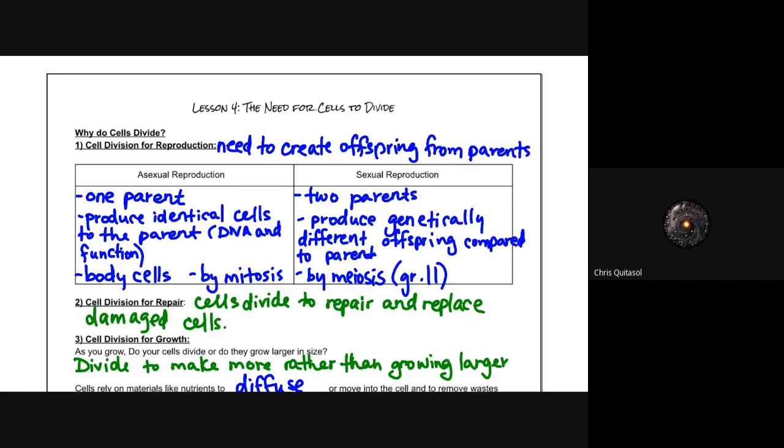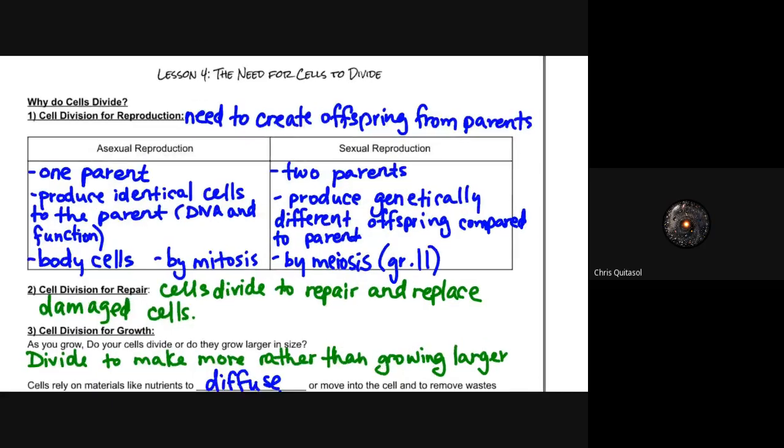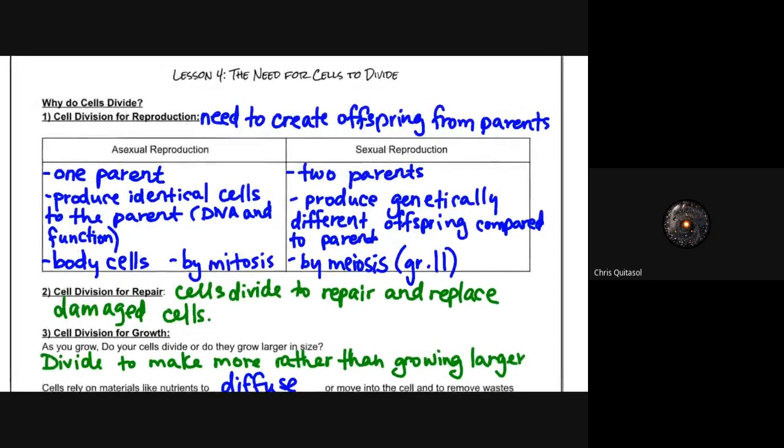Okay, welcome back to lesson four, the need for cells to divide. Today we're going to look at the idea of cell replication as the means with which cells reproduce and why it's so important that cells divide the way that they do.